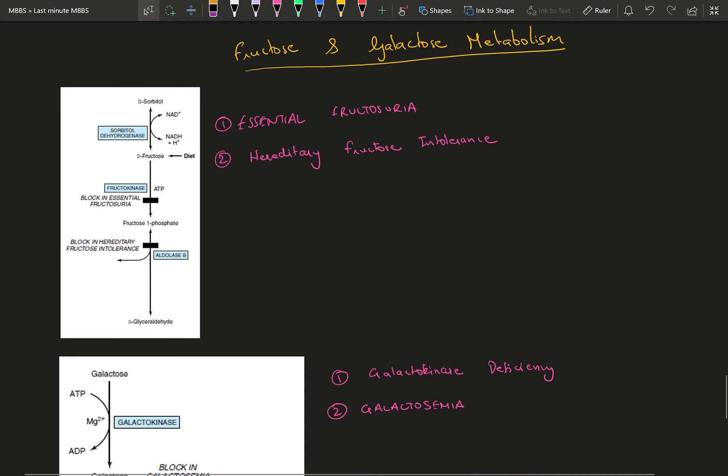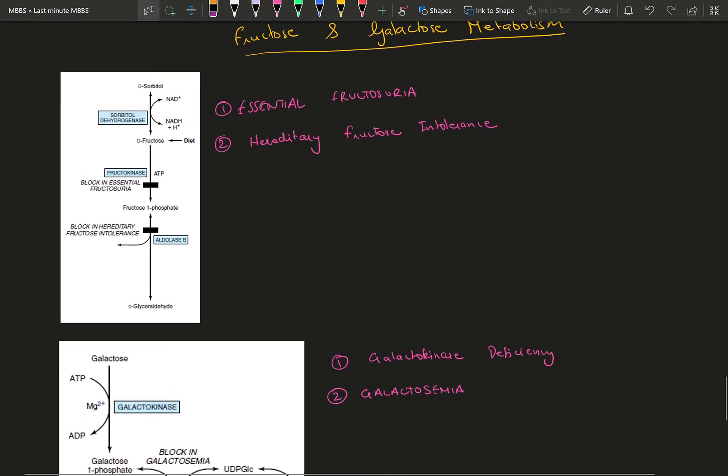Moving on to fructose and galactose. This is going to be very short. I will be just touching upon where they are going to join in the glucose metabolism, because ultimately they are going to pop up somewhere in glycolysis. Fructose is taken in from the diet and the first step is fructose 1-phosphate. You add a phosphate to it so it's trapped within the cell. And the enzyme which is going to do this is fructokinase.